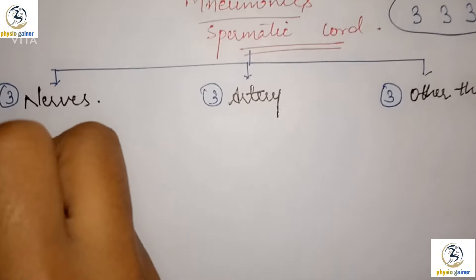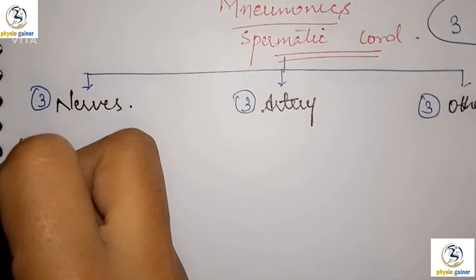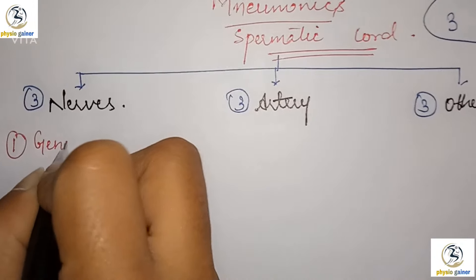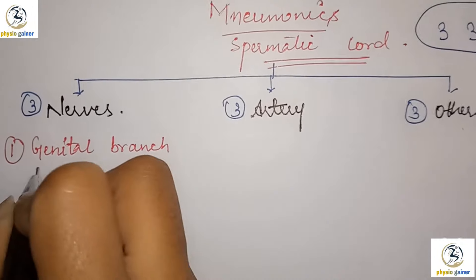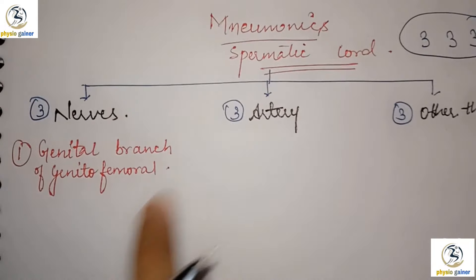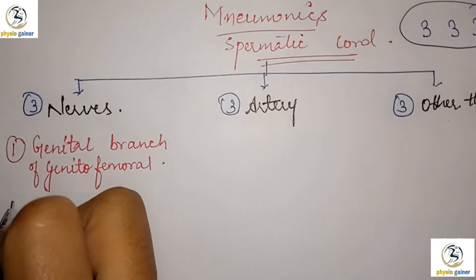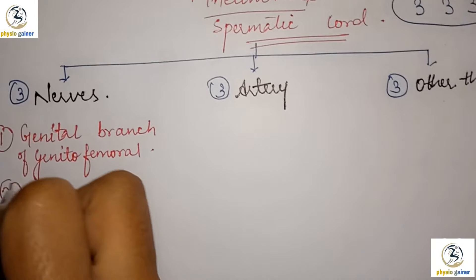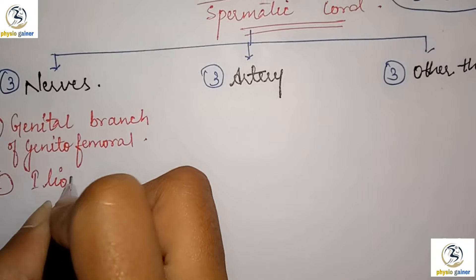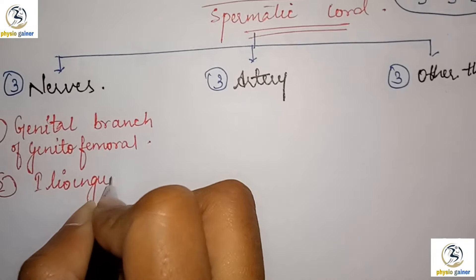Now, the first thing is 3 nerves. The first nerve is the genital branch of genitofemoral. The second is ileoinguinal.